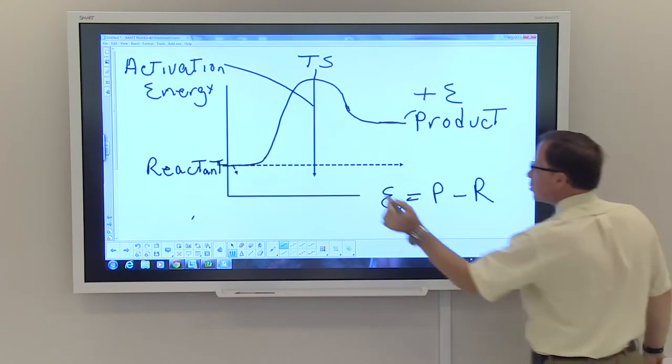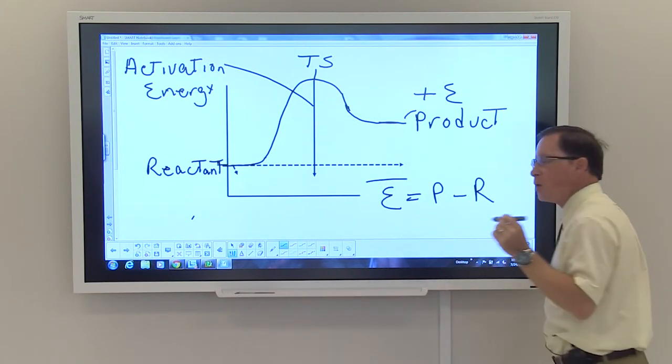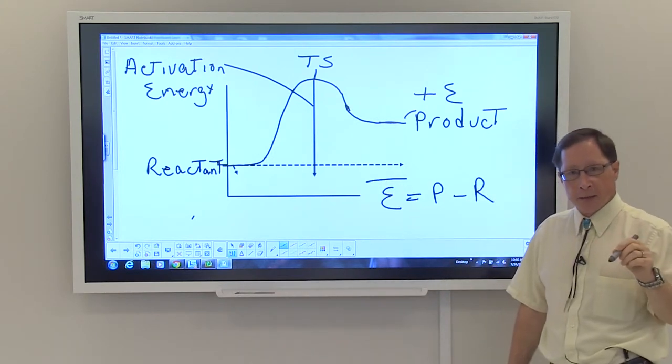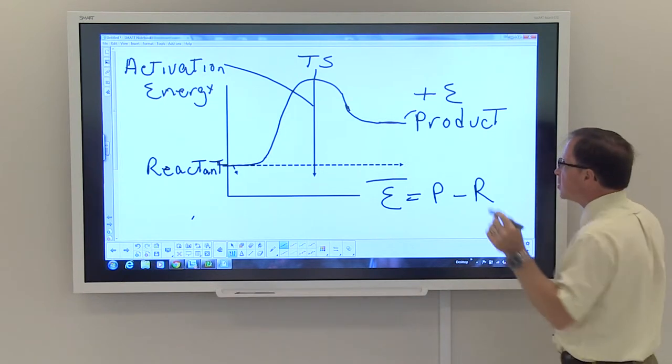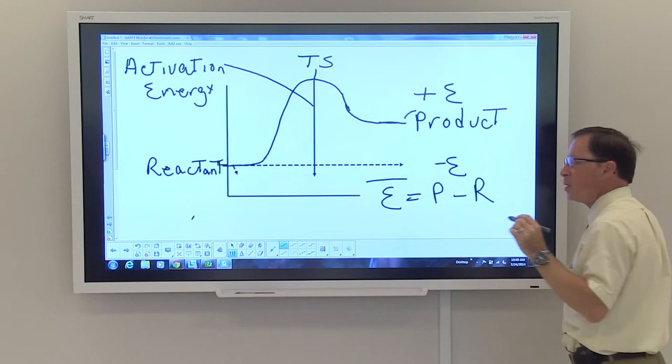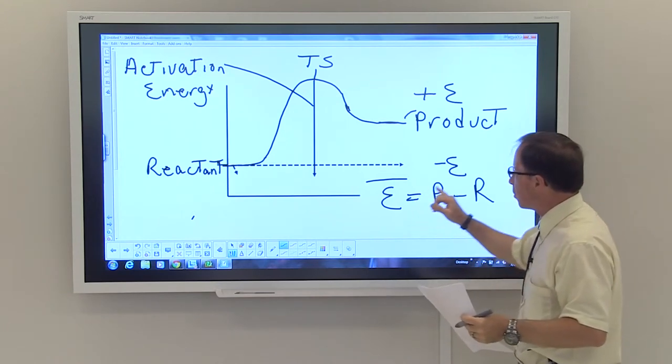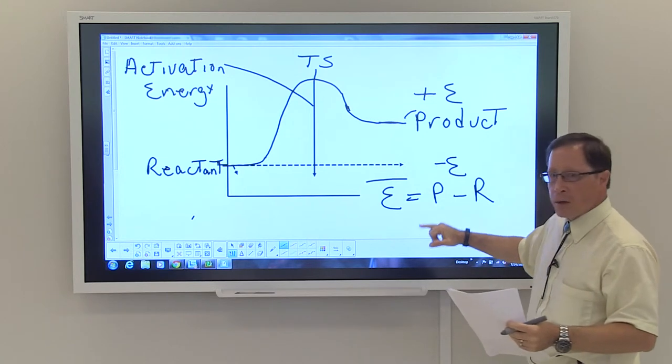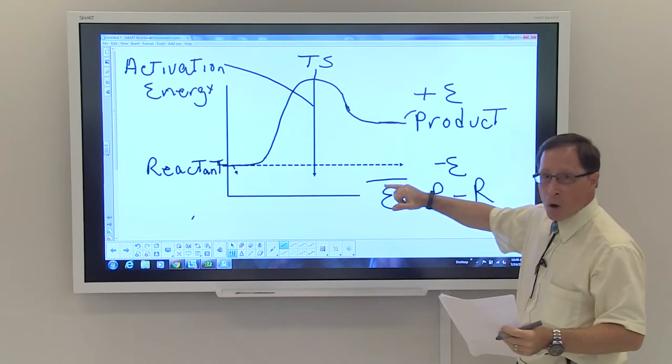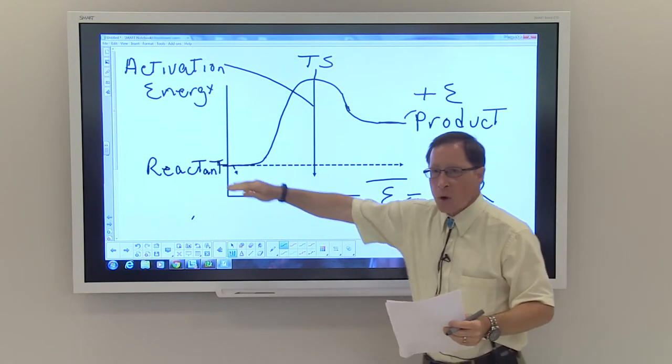What if we had a situation where our product had an energy down here, below the reactant? In that instance, your energy output is going to be negative, meaning that you're going to actually require less energy overall to produce the product than you're putting into the process.